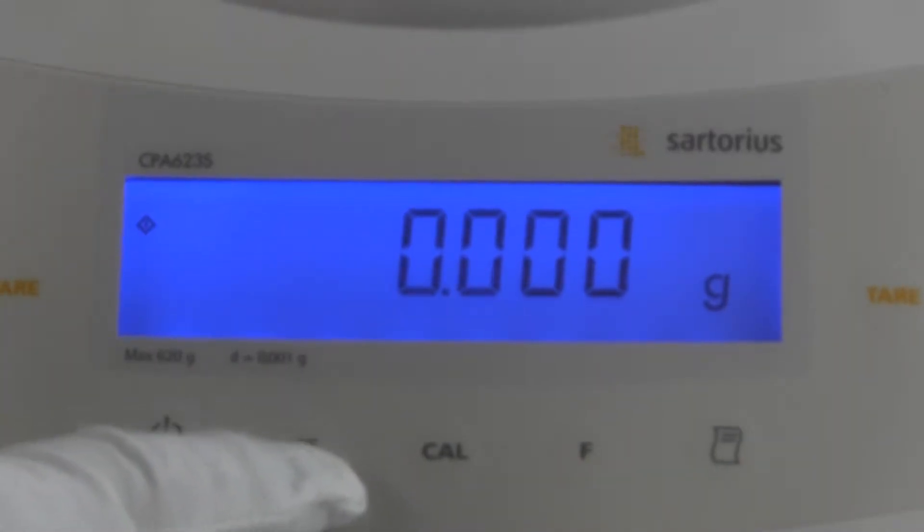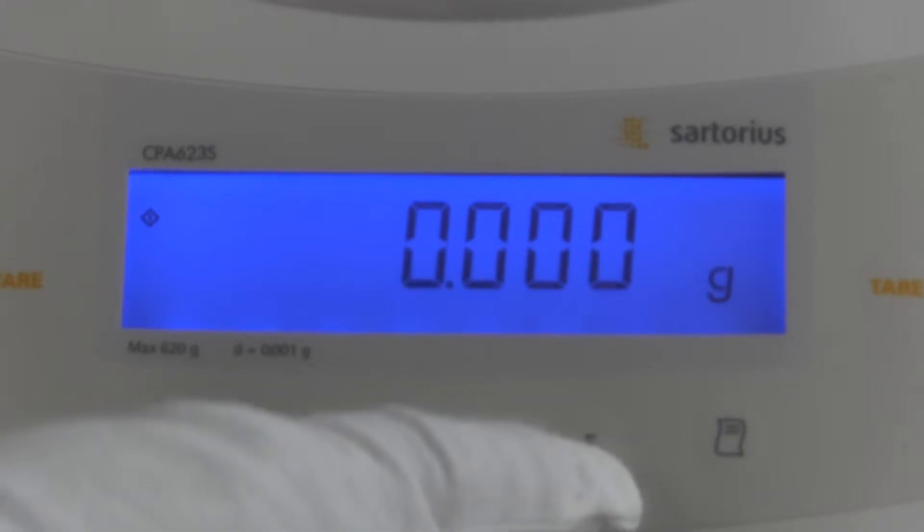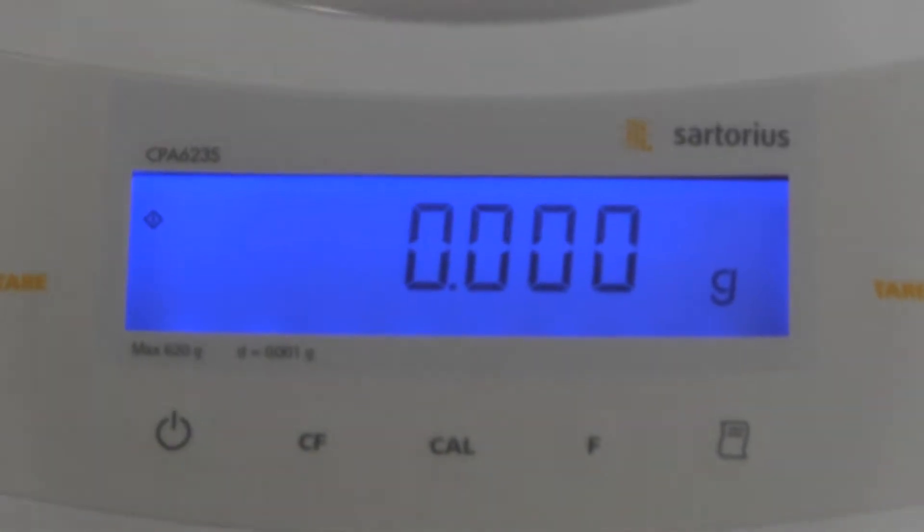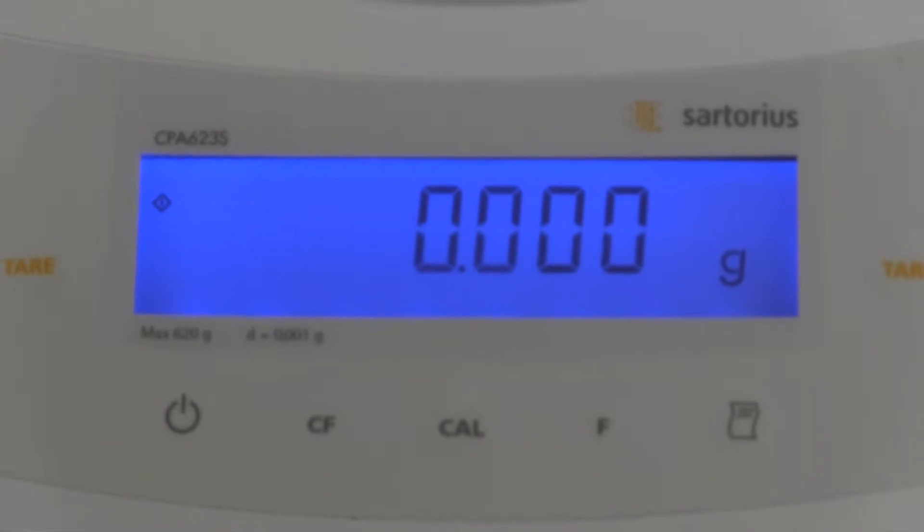We have the CF. This is the clear function. We have the CAL key. We have the F key, which is the function button. If we set this balance up for a second weigh mode, we could toggle. And then all the way over on the right-hand side is the print key. So those are the functions of the balance. Very simple for operation.